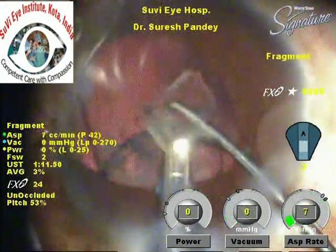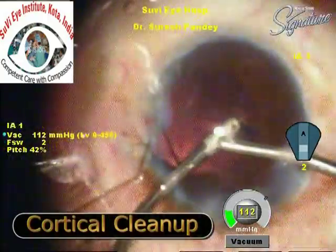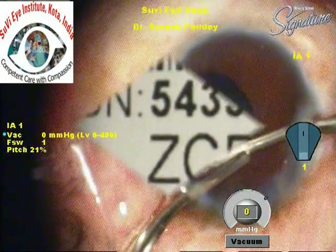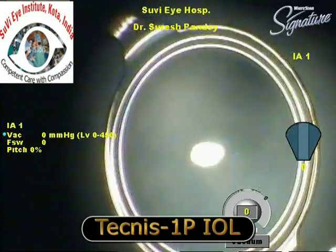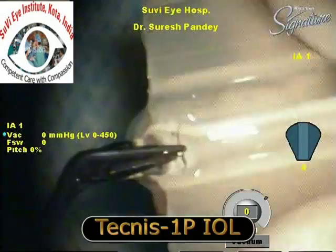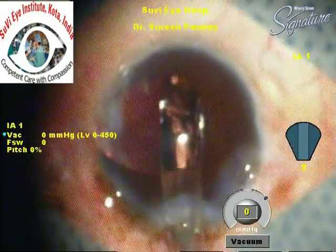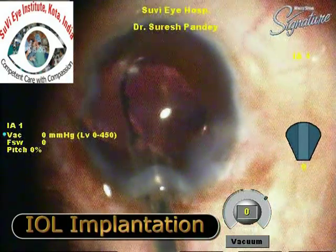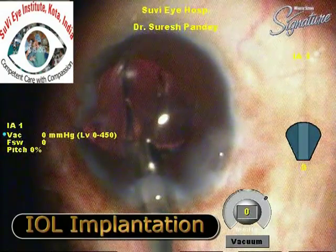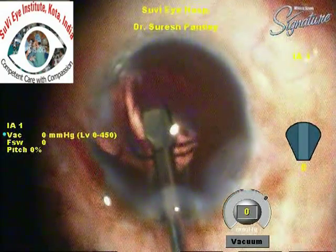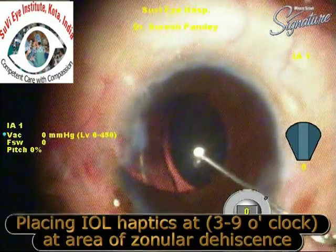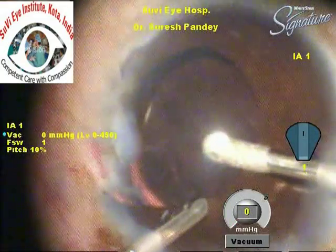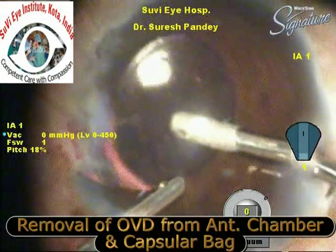A second instrument is used to guard the posterior capsule. We then perform cortical cleanup — good hydrodissection ensures we don't need to pull on the capsular fornices during this maneuver. Bi-manual irrigation-aspiration is safer in these cases. We are now implanting a Tecnis one-piece IOL; it should go smoothly into the capsular bag with no jerky movements. Most surgeons prefer to place the IOL haptics in the area of the dehiscence so the haptic also stabilizes the capsular bag.